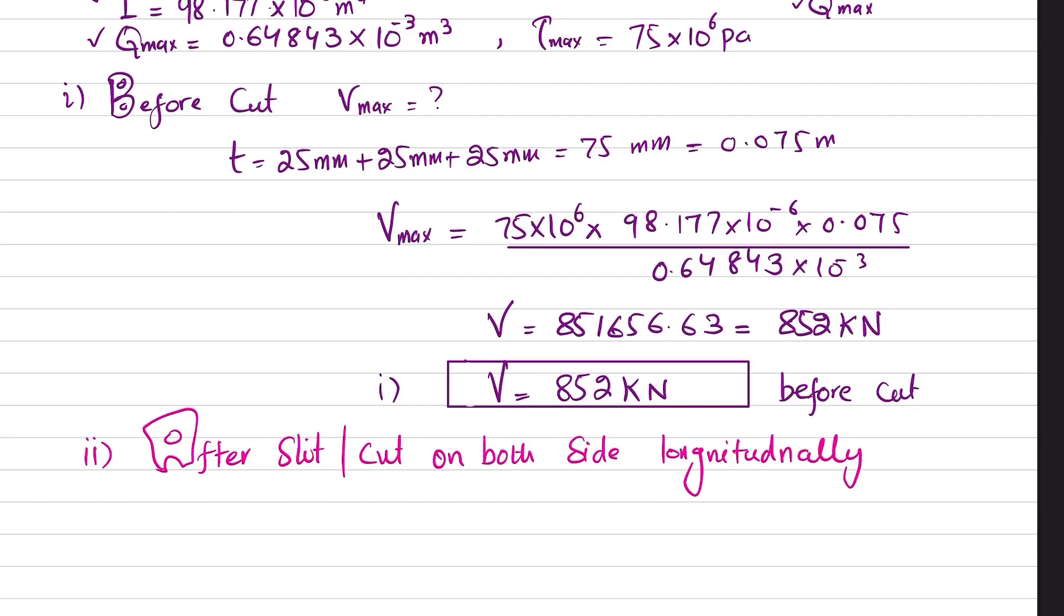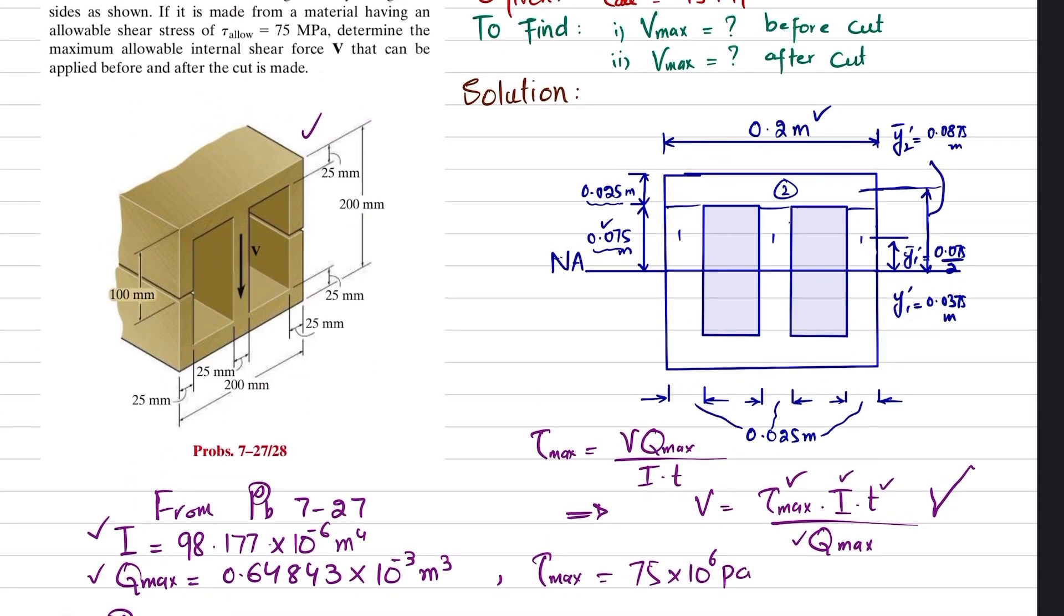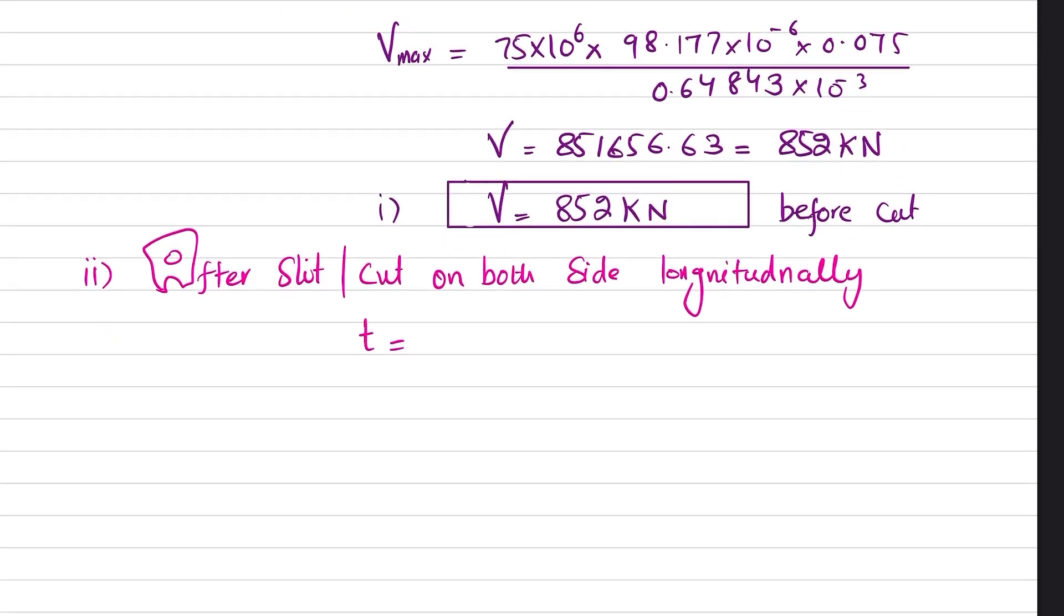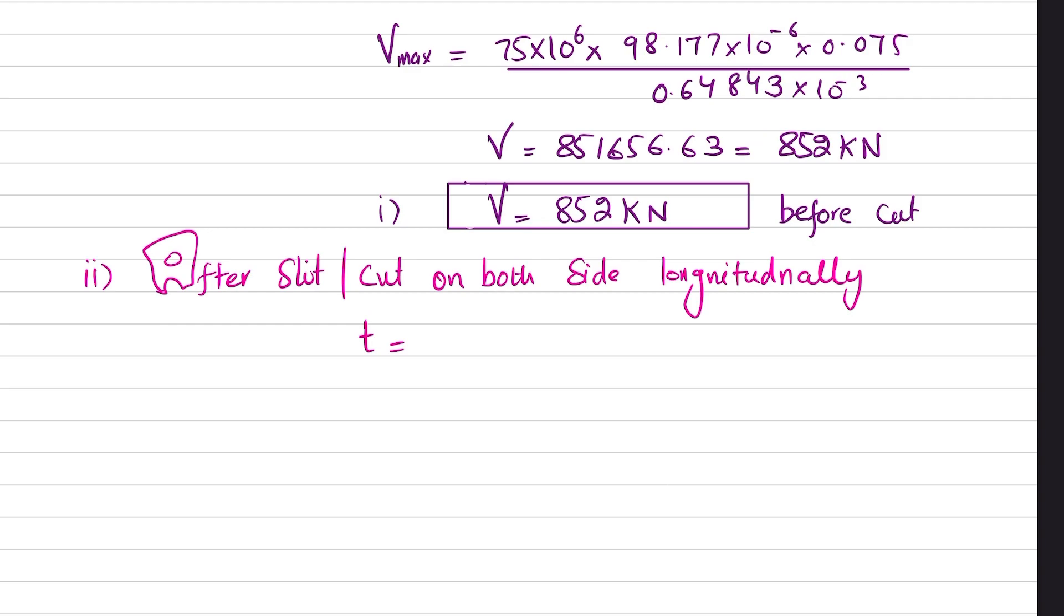What will be the t when the cut is made? If you look at this, if this slit is made on both sides, we will be left with only this thickness, which is equal to 25 millimeters. So we will write t equals 25 millimeters, or that equals 0.025 meters.